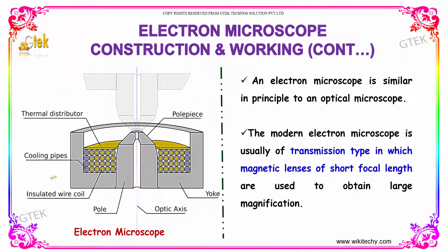An electron microscope is similar in principle to an optical microscope. The modern electron microscope is usually of transmission type, in which magnetic lenses of short focal length are used to obtain large magnification.